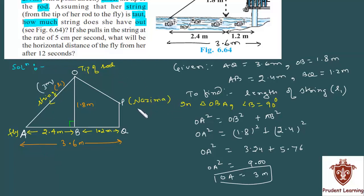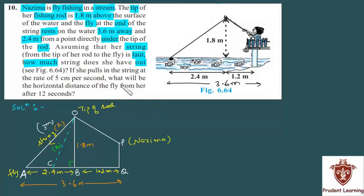Let us now move on to the second part. We are given: if she pulls the string at the rate of 5 cm per second, what will be the horizontal distance of the fly from her after 12 seconds? Now Najima is pulling the string towards herself at the rate of 5 cm per second for 12 seconds. What will happen is the fly will also move in this direction towards Najima. We assume after 12 seconds the fly's new position is at point C. We need to find this new horizontal distance.